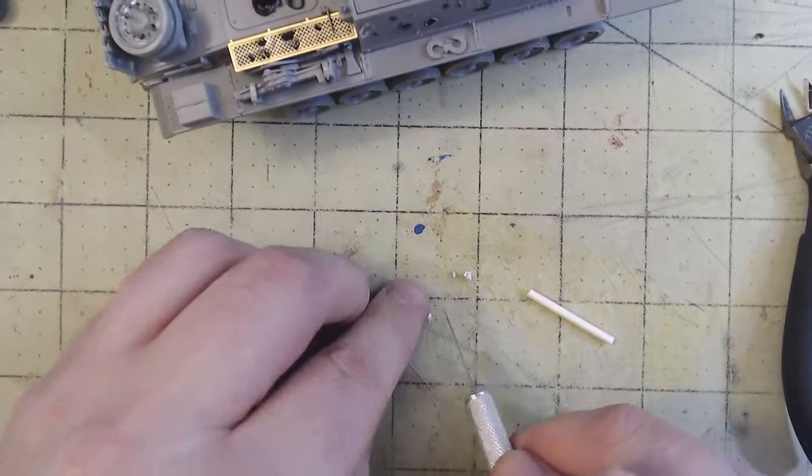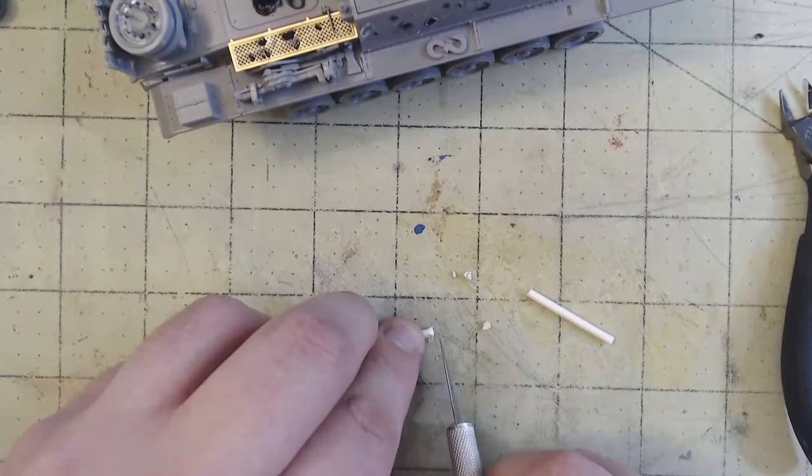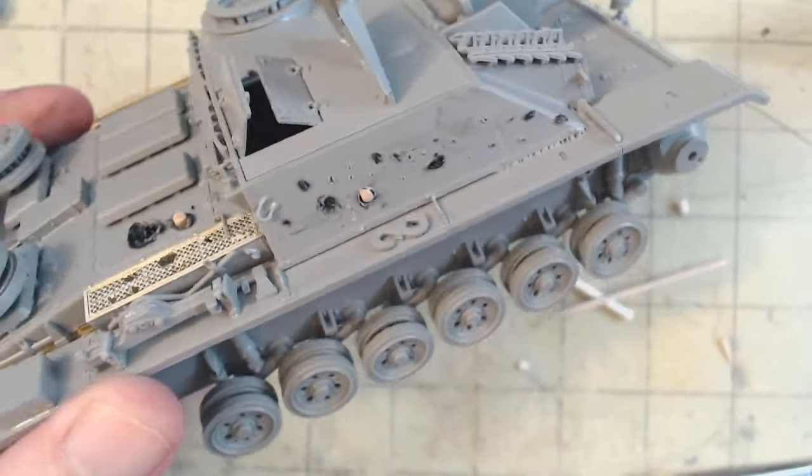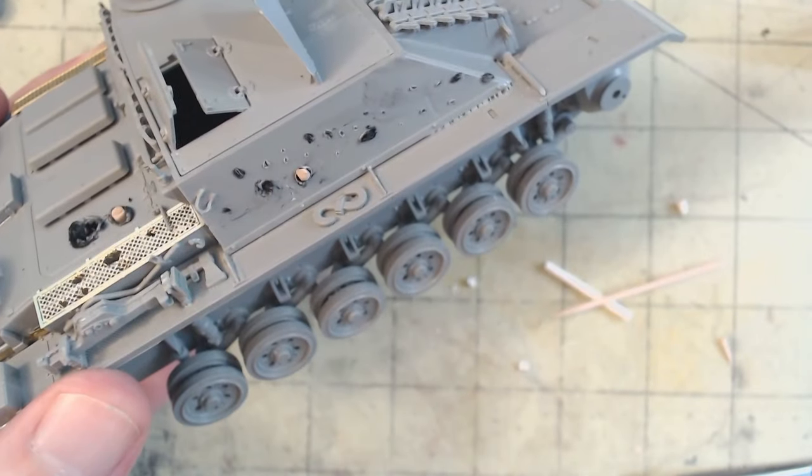Another interesting piece that you'll sometimes see in photos of real life AFVs are undetonated shells that are stuck in the armor. To model this, I simply cut a section of a cocktail stick and glued it in place.